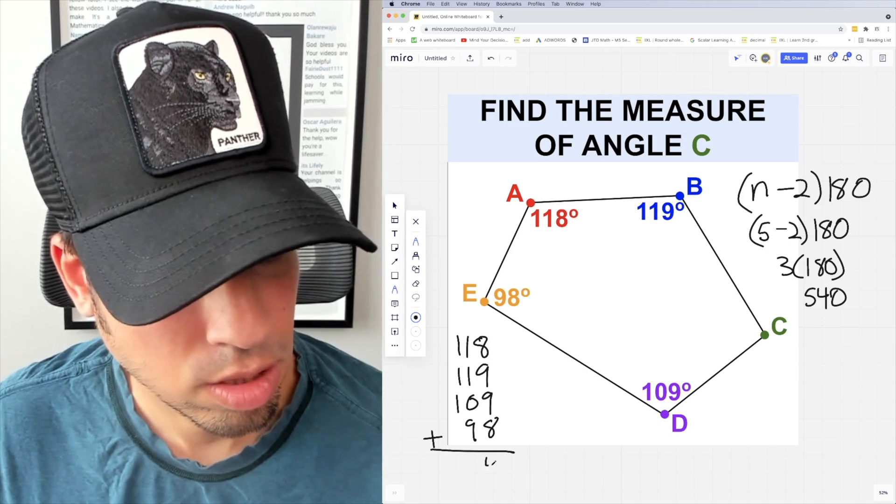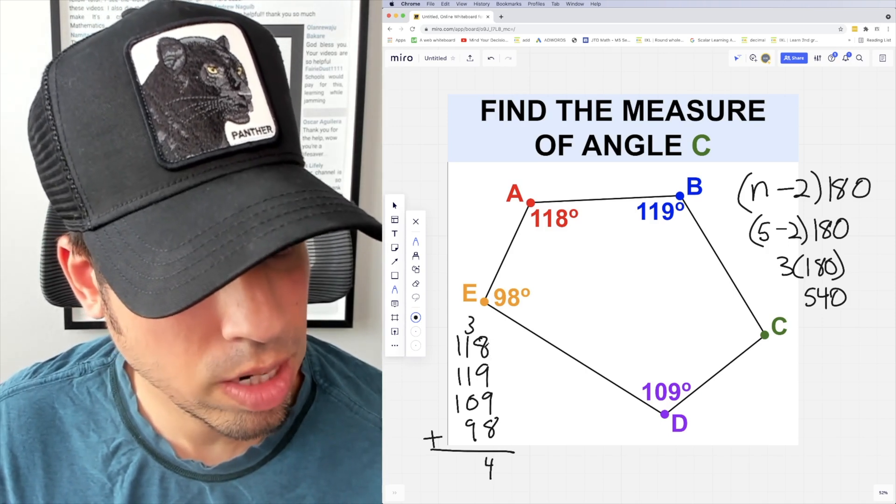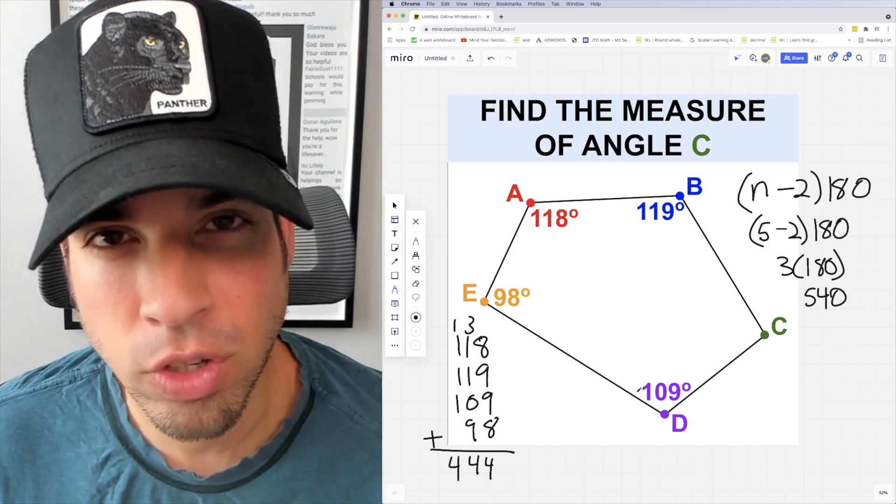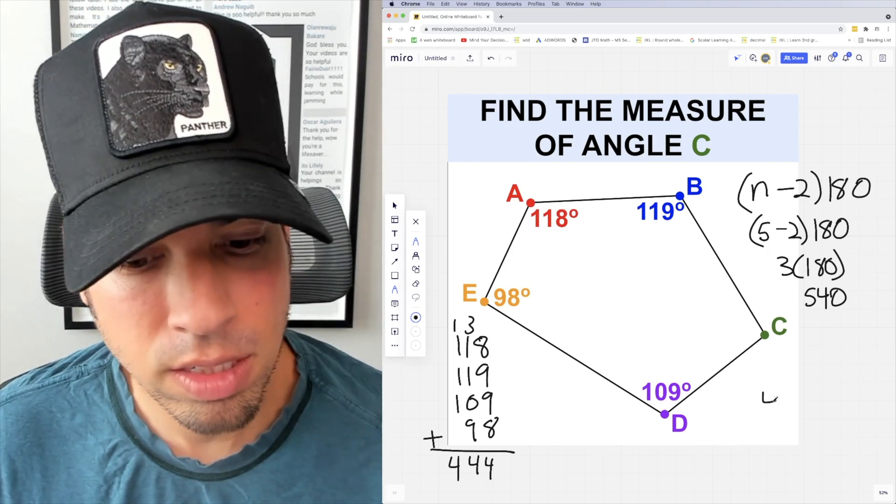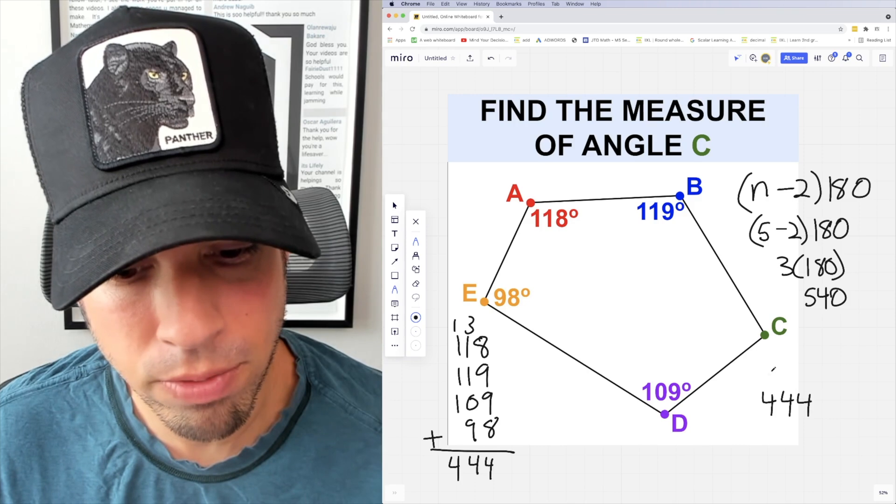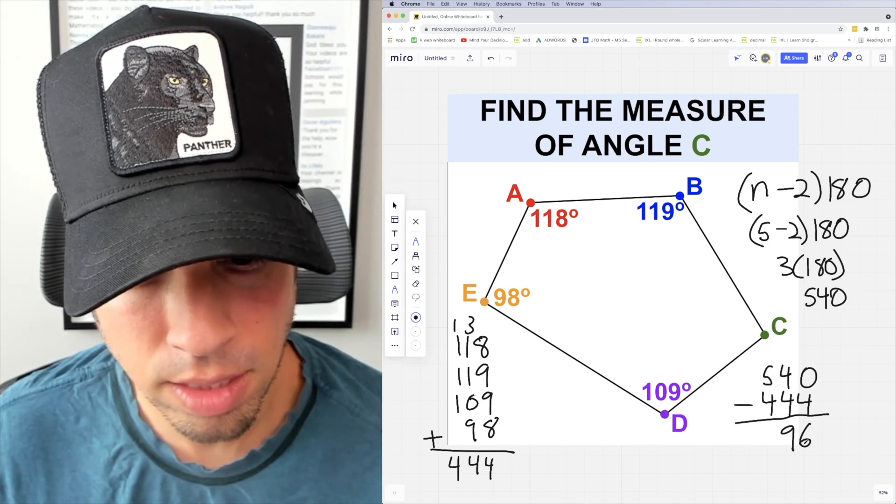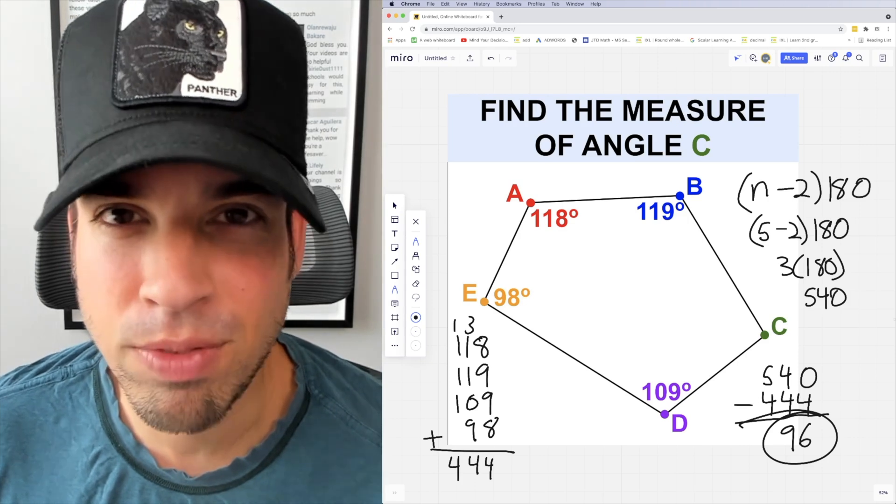That's 34, carry the 3, 14, carry the 1, which gives us 444. Finally, let's subtract 444 from 540, which gives us 96.